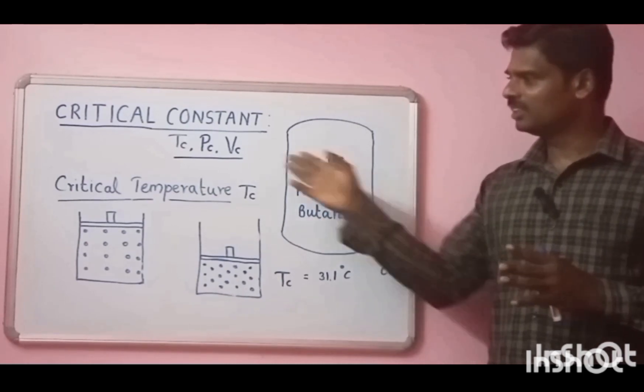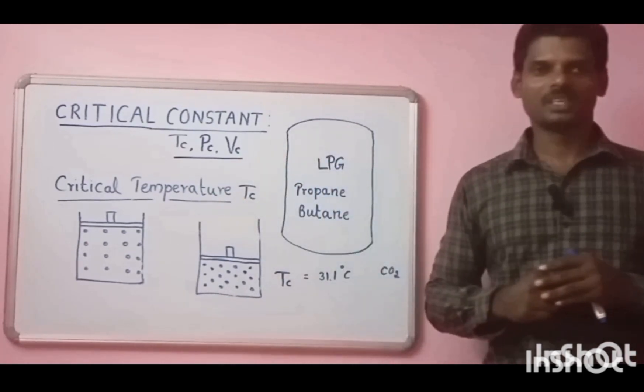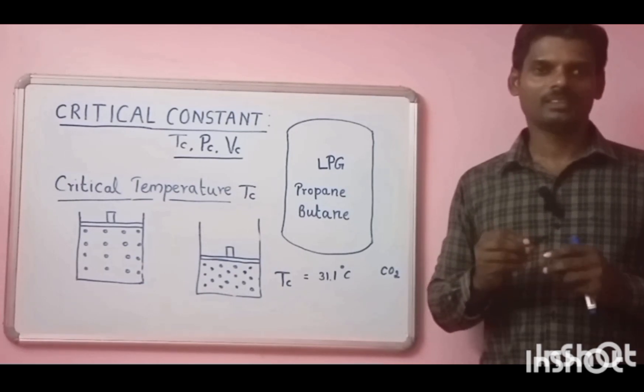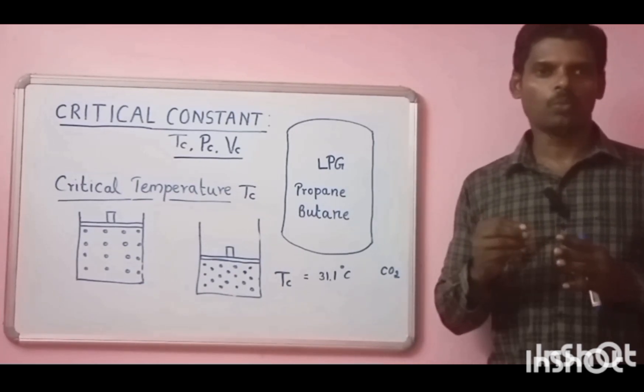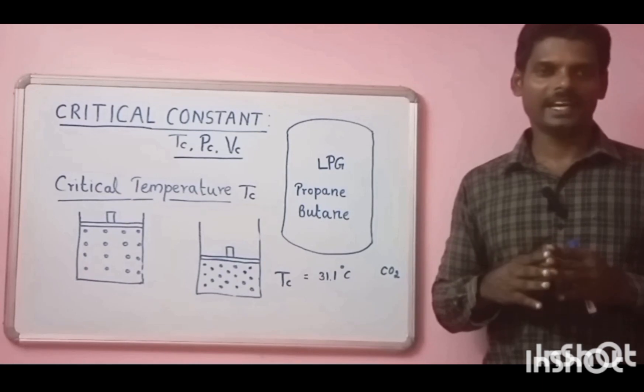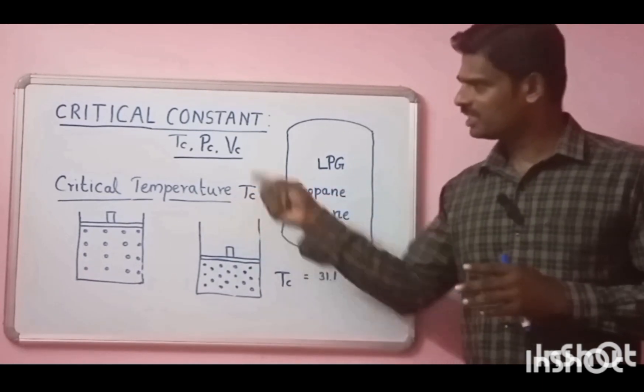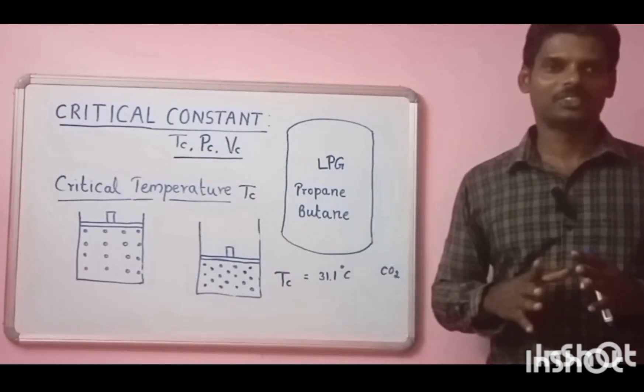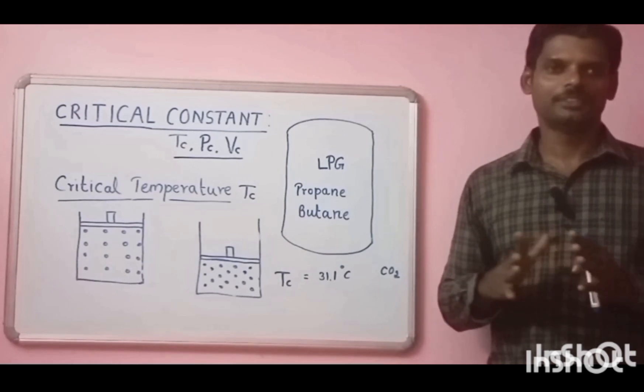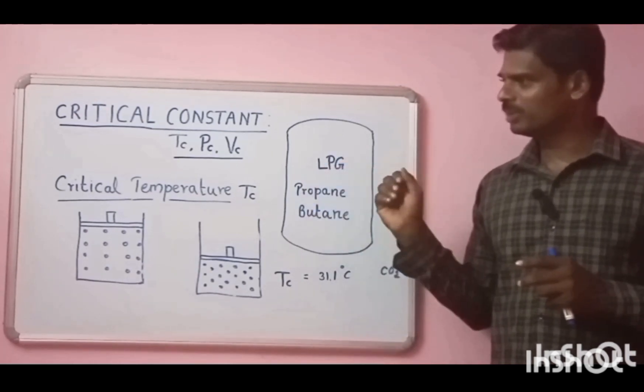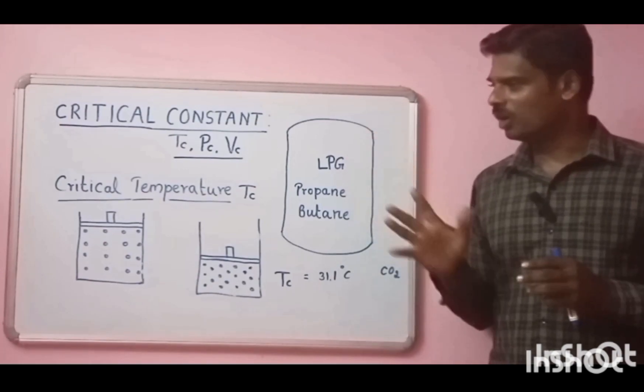So the same thing for the critical volume is expressed as volume occupied by one mole of a gas at its critical temperature and critical pressure. So these are the definitions for critical temperature, critical pressure, and critical volume.